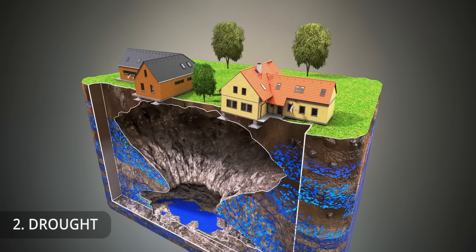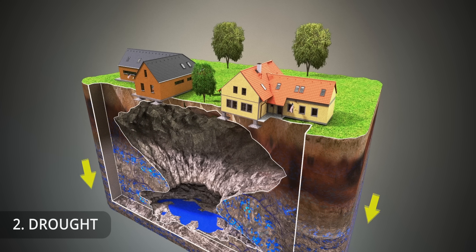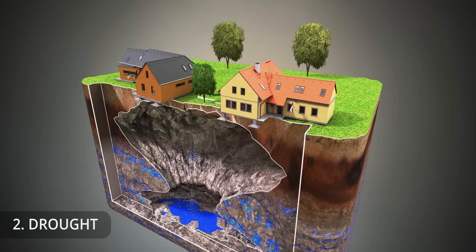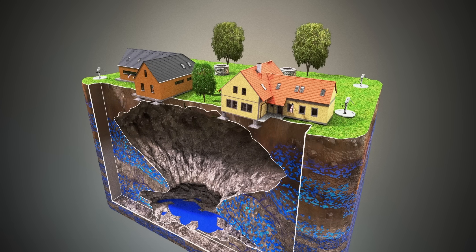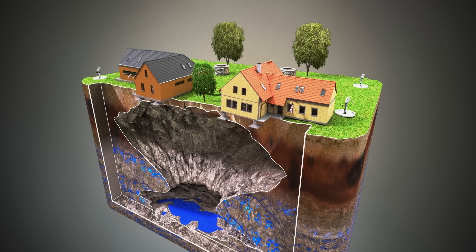Even drought can be a trigger for sinkhole formation. During a drought, the water table can drop significantly. The water in a cavern actually provides buoyant support to the roof. When that water is gone, the roof loses that support and can be more prone to collapse. Pumping large amounts of water from wells also causes the same thing.